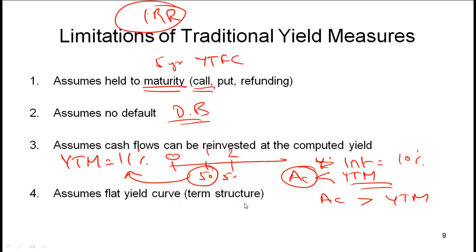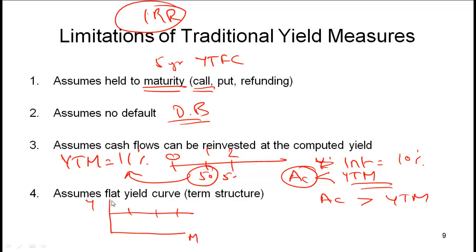Finally, we assume a flat yield curve — a flat term structure — which means that all cash flows are discounted at the same rate. These yield measures essentially assume that the yield curve is flat.